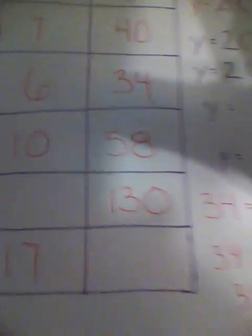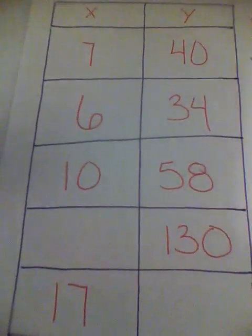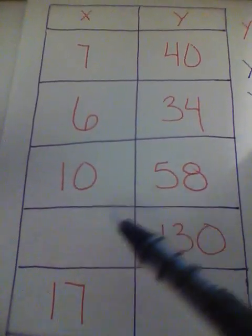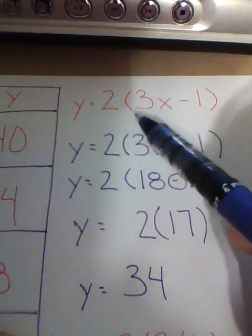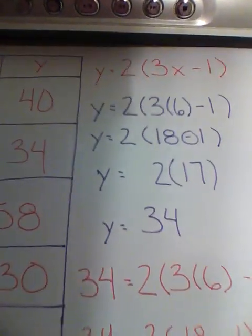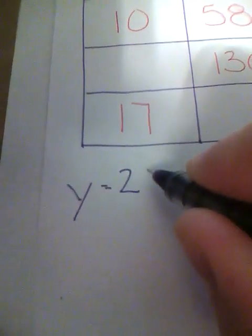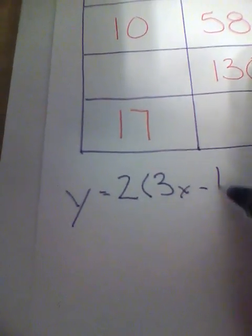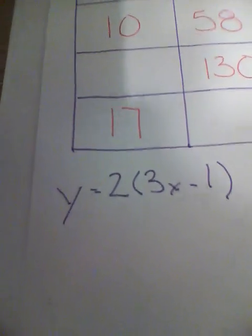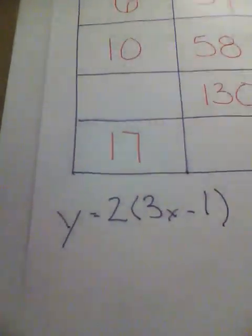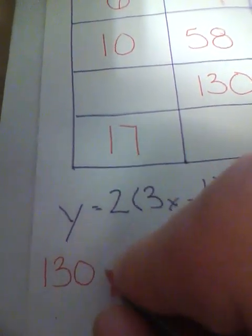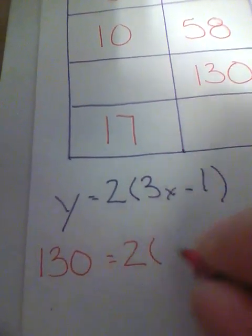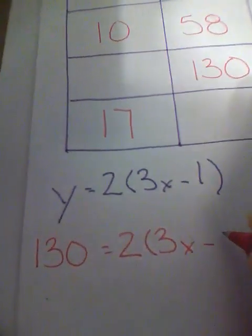Now I always find that solving for X is a bit more complex. So if Y is equal to 130, I need to solve for X. All I'm going to do is go back up to my original function, Y equals 2 times 3 times X minus 1 in parentheses. I'm going to go down here and rewrite this function. Y is equal to 2 times in parentheses 3 times X minus 1 in parentheses. Now that I know what Y is, I am going to substitute in for it. So now I have 130 is equal to 2 times in parentheses 3 times X minus 1.